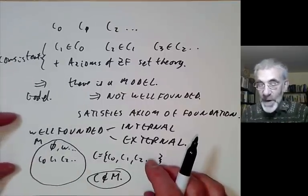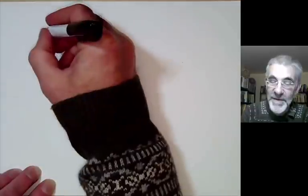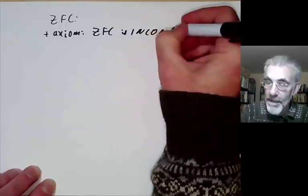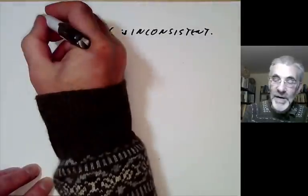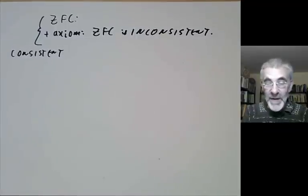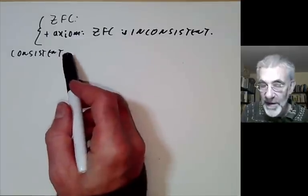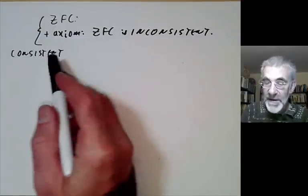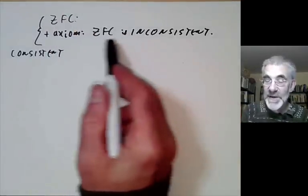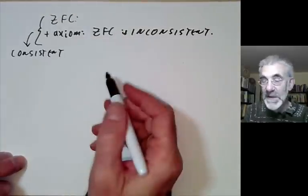Things can get even weirder. Take ZFC and add the axiom: 'ZFC is inconsistent.' Oddly enough, this is actually a consistent theory, even though it seems to claim it's inconsistent. The reason follows from Gödel's incompleteness theorem: if ZFC is consistent then you can't prove it's consistent, which means if you add the axiom saying it's inconsistent, you can't derive an inconsistency. So this theory is somewhat bizarrely consistent.